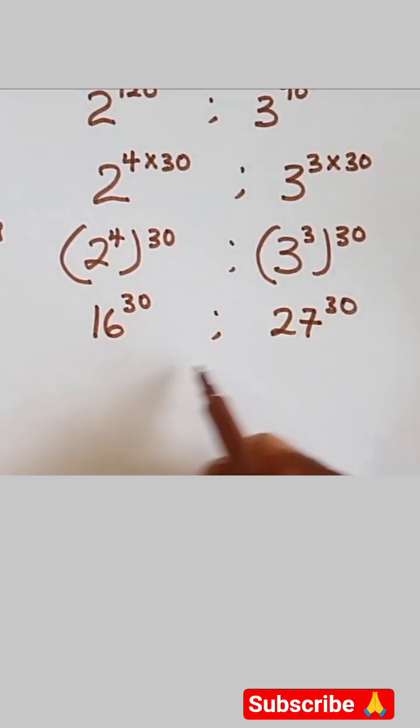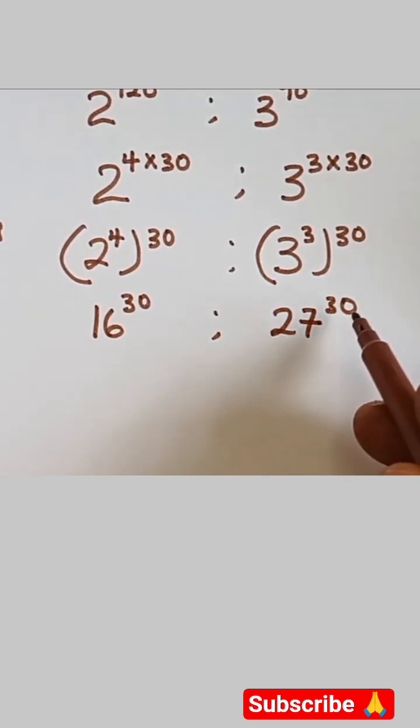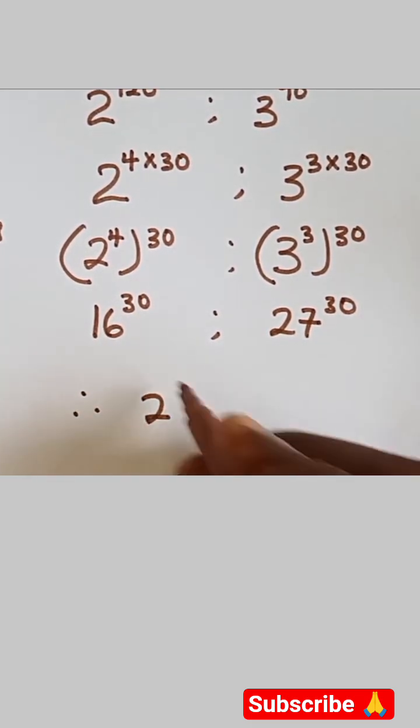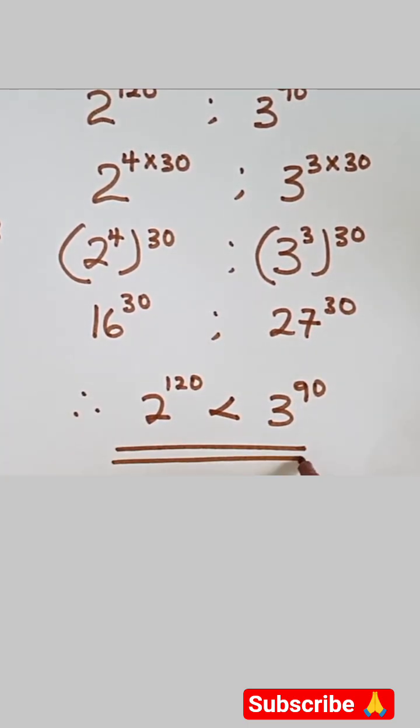You can see they have the same power now, and from their basis we can compare. We have 16 and here we have 27, that means 27 raised power 30 is more than 16 raised power 30. Therefore, 2 raised power 120 is less than 3 raised power 90, because 3 raised power 90 is higher. This is the final answer.